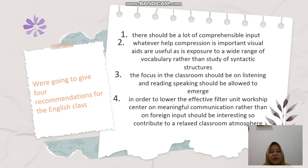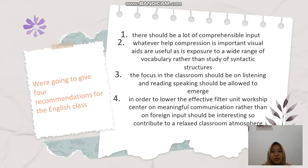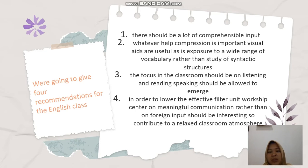Four recommendations for the English class: First, there should be a lot of comprehensible input. Second, whatever helps comprehension is important — visual aids are useful, as is exposure to a wide range of vocabulary rather than study of syntactic structures. Third, the focus in the classroom should be on listening and reading, and speaking should be allowed to emerge. Fourth, in order to lower the affective filter, activities centered on meaningful communication rather than unvaried input should be interesting, so as to contribute to a relaxed classroom atmosphere.